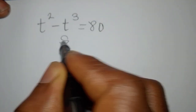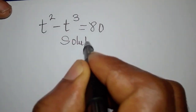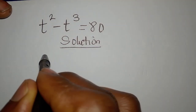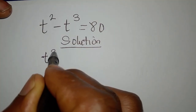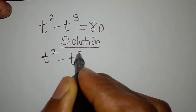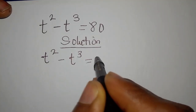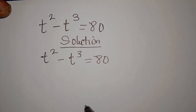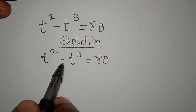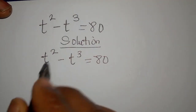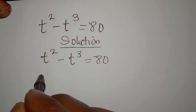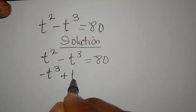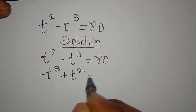Hi everyone, you're welcome. Let's provide a solution to this problem: t squared minus t cubed equals 80. I always make sure to write the one with the highest power first, so this gives us negative t to the power of 3 plus t squared equals 80.